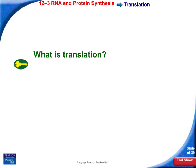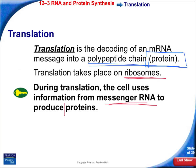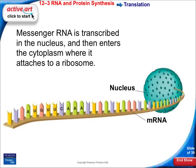Translation is the decoding of the mRNA strand into a polypeptide chain — basically, we're making a protein. It takes place in the ribosomes. During translation, cells use the information from a messenger RNA to make proteins. Remember, during transcription we have a DNA template and we make RNA — in this case a messenger RNA. This process of using DNA as a template to make RNA takes place in the nucleus.